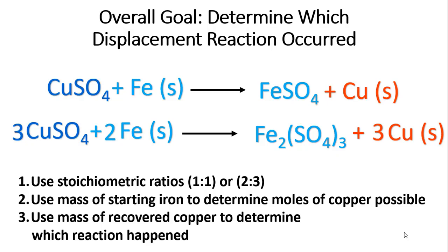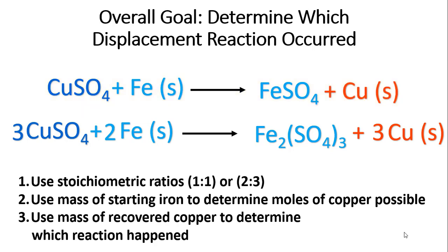The overall goal is to determine which reaction occurred. Either the top reaction happened — copper sulfate and iron zero giving iron two sulfate and copper — or the second reaction where three moles of copper sulfate and two moles of iron gives one mole of iron three sulfate and three moles of copper solid.